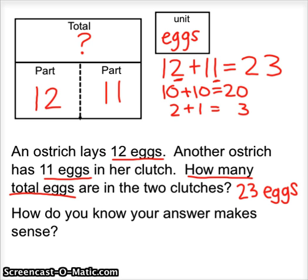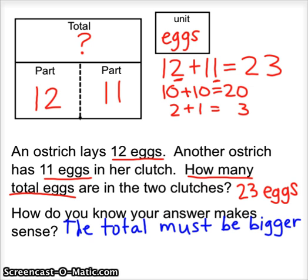Now it asks, how do you know your answer makes sense? How does 23 make sense? If we're looking for the total, the total must be bigger than the two parts. If your total is smaller than the two parts, you must have done something wrong. We know 23 makes sense because it is bigger than 12 and 11.